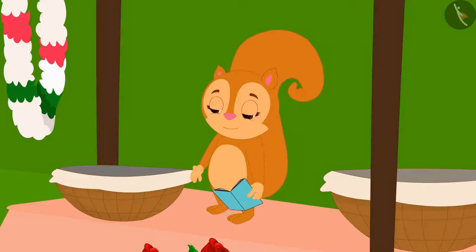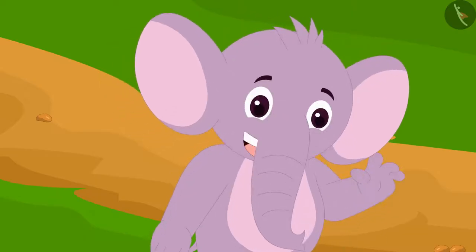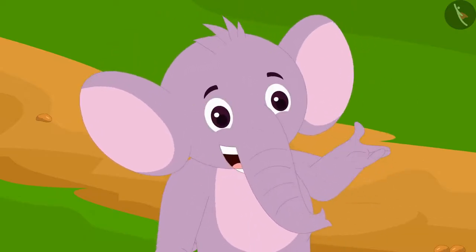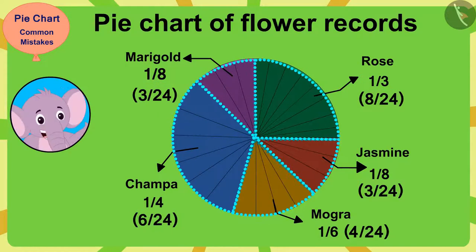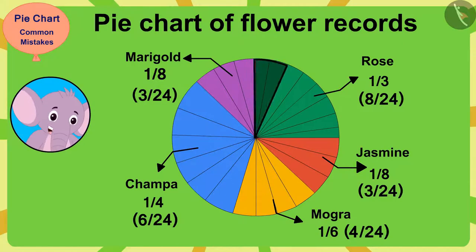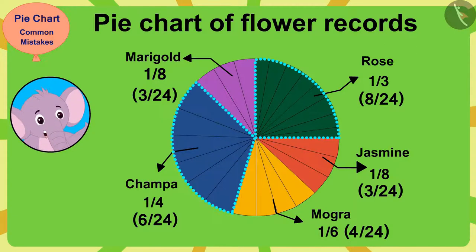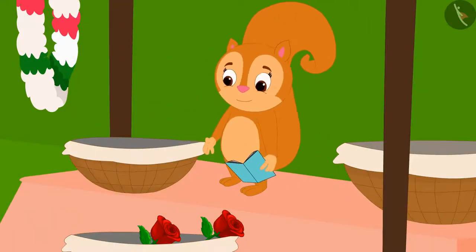Appu figured out the problem. Even though Chanda had colored the parts of the pie chart according to the correct fractions, when she made the parts she created unequal parts instead of equal parts. So one-third of the pie chart seems smaller than one-quarter of the pie chart — that is the mistake.